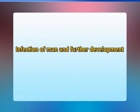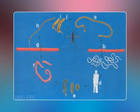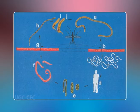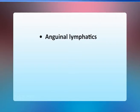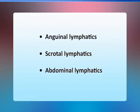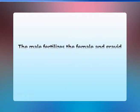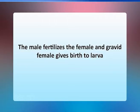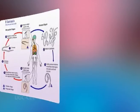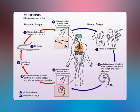The infective third stage larvae are deposited by the mosquito near the puncture site, from where they enter through the puncture wound. The larvae reach the lymphatic channels, settle down in inguinal, scrotal, or abdominal lymphatics, and begin to grow into adult forms. In five to eight months they become sexually mature. The male fertilizes the female, and the gravid female gives birth to larvae. A new generation of microfilariae is emitted into the peripheral circulation, thus completing the life cycle.